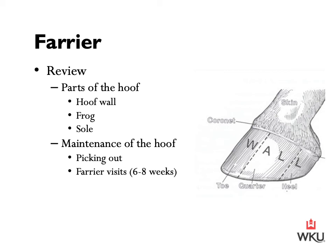The next part of the hoof in review is the frog. This is the wedge-shaped pad of elastic horn that is in contact with the ground. Its function is to provide traction, aid in the reduction of concussion, and to help circulate blood through the hoof and back up the leg. As for the sole, it is the larger surface of the foot that protects the sensitive structure above it. The sole should be slightly concave and is non-weight bearing. The thickness of the sole will vary from horse to horse, as a horse with thinner soles is greatly more prone to bruising.